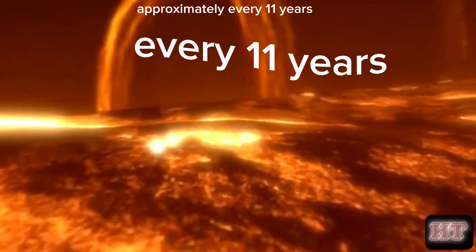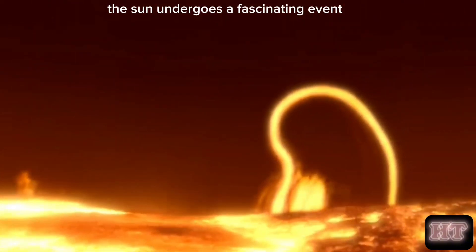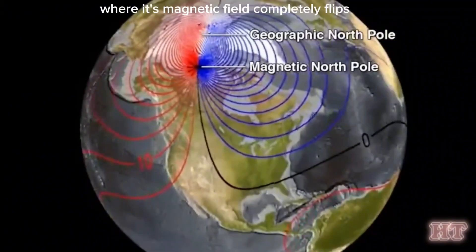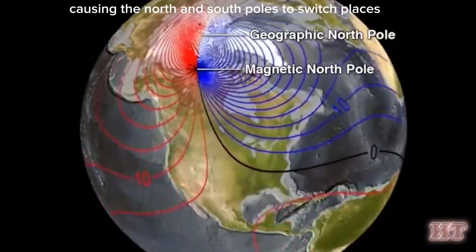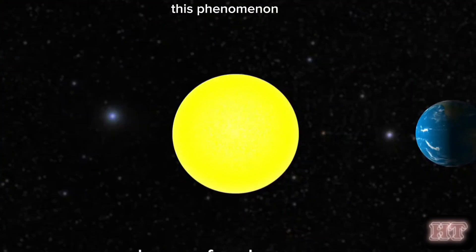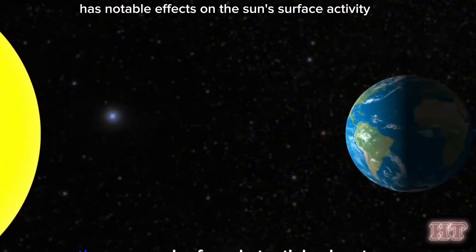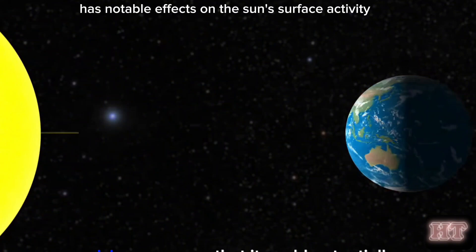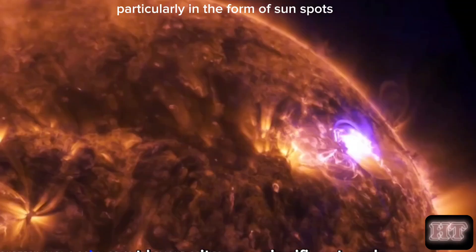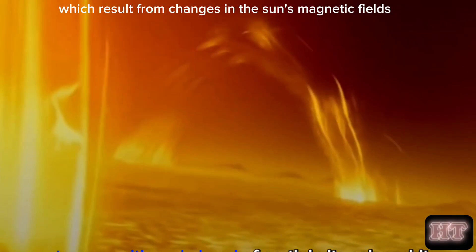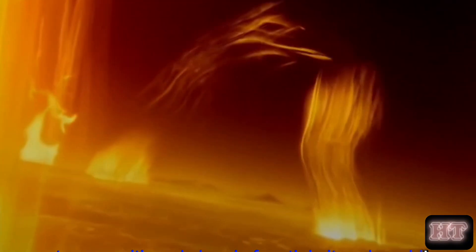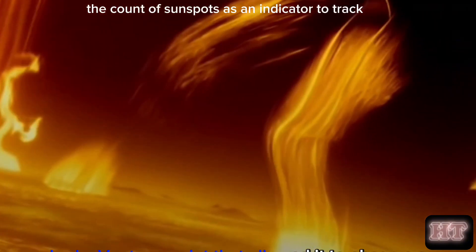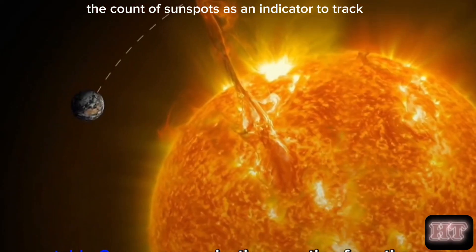Approximately every 11 years, the sun undergoes a fascinating event where its magnetic field completely flips, causing the north and south poles to switch places. This phenomenon, known as a solar cycle, has notable effects on the sun's surface activity, particularly in the form of sunspots, which result from changes in the sun's magnetic fields. Scientists use the count of sunspots as an indicator to track the solar cycle.